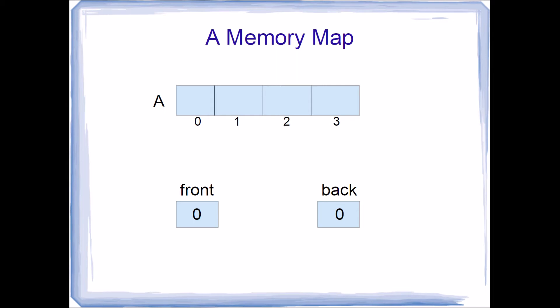Let's say we want to enqueue a value. First we check to see if the queue is not full. If it's not, we write to the back — in this case 8 — and then increment back. So 8 is now at the front, and our front variable reflects that by having the index of that element. Back has been incremented to 1, which is where our next value goes. We repeat this process for each enqueue: check for room, write the value to the back, then increment back.